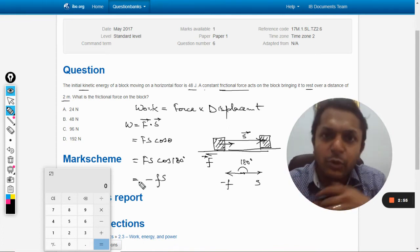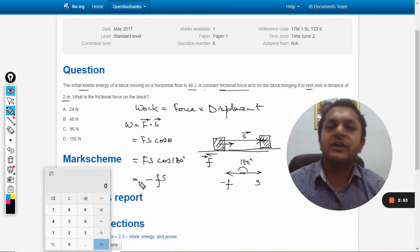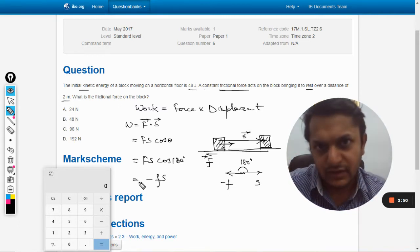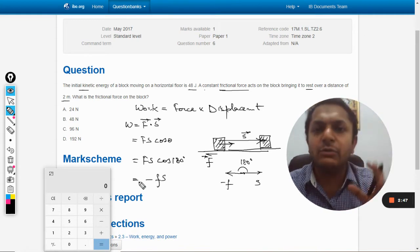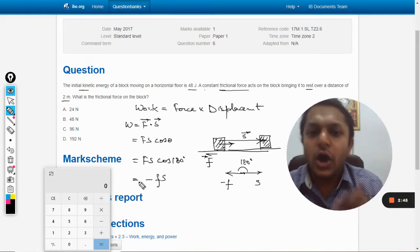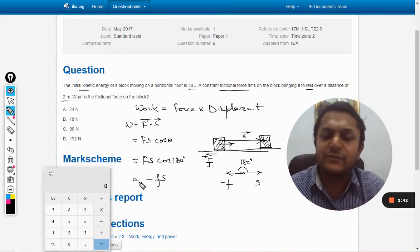...but the body is moving towards the right, so work done is negative. By that explanation, you can directly apply the formula W = -Fs, or you can show these steps if you want. Either way, we reach the same conclusion.